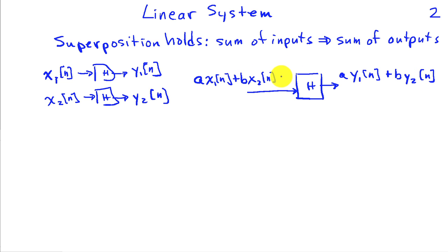For example, let's suppose b is 0 and I let a be equal to 2. What we're saying is that if we double the input, then we're going to double the output. Similarly, if I have both a and b equal to 1, that would say that summing two inputs results in the sum of the corresponding outputs. That's a linear system.